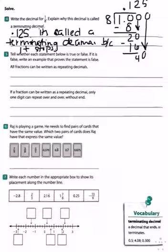Number 5. Tell whether each statement below is true or false. If it is false, write an example that proves the statement is false. All fractions can be written as repeating decimals. That is false because the fraction 1 half is written as 0.5. It is a terminating decimal. It does not repeat.